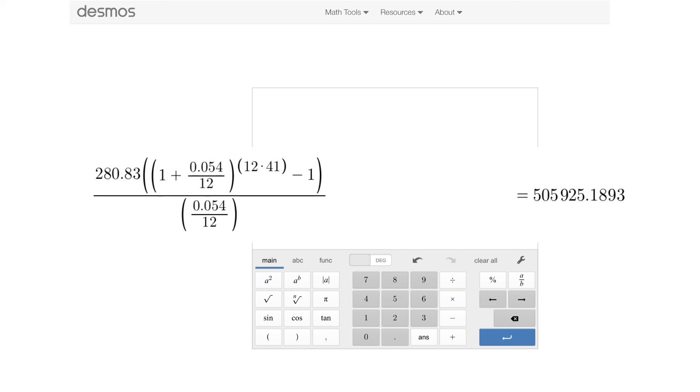Make sure when you type in to Desmos, you type it in just like the expression that I have written here. So you want to have $280.83 as being your monthly deposit. You have to make sure you have all of the parentheses that I have, specifically 1 plus 0.054 over 12 is contained in a parentheses. That's all raised to the 12 times 41. And that expression is subtract, from that expression, we take away 1.